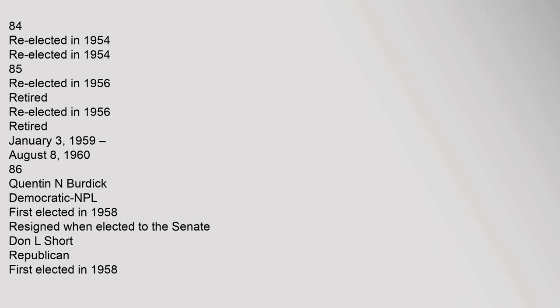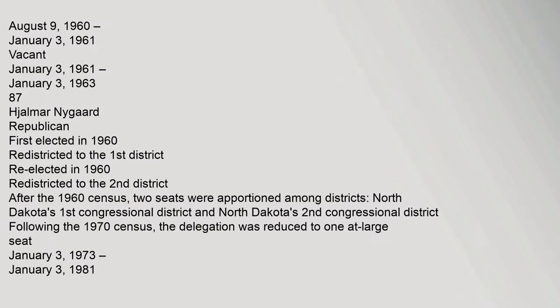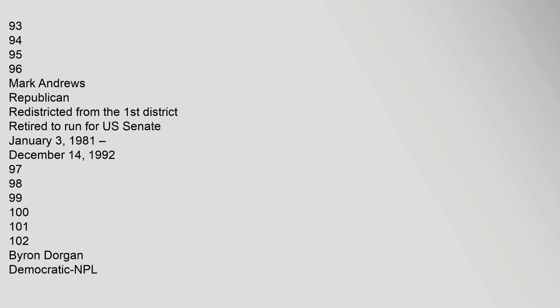From August 9, 1960 to January 3, 1961: Vacant. From January 3, 1961 to January 3, 1963 (87th Congress): Hjalmar Nygaard, Republican, first elected in 1960, redistricted to the 1st District; re-elected in 1960, redistricted to the 2nd District. After the 1960 census, two seats were apportioned among districts: North Dakota's 1st and 2nd Congressional Districts. Following the 1970 census, the delegation was reduced to one at-large seat.